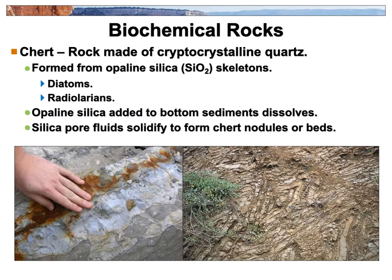That's where all the chert you guys find comes from. There's so much of it — why? Because it's hard; it scratches glass. Whereas limestone just wears away, chert is resistant to chemicals and resistant to tumbling in the creek. So every orange or gray rock you pick up is almost always chert down in the creek.